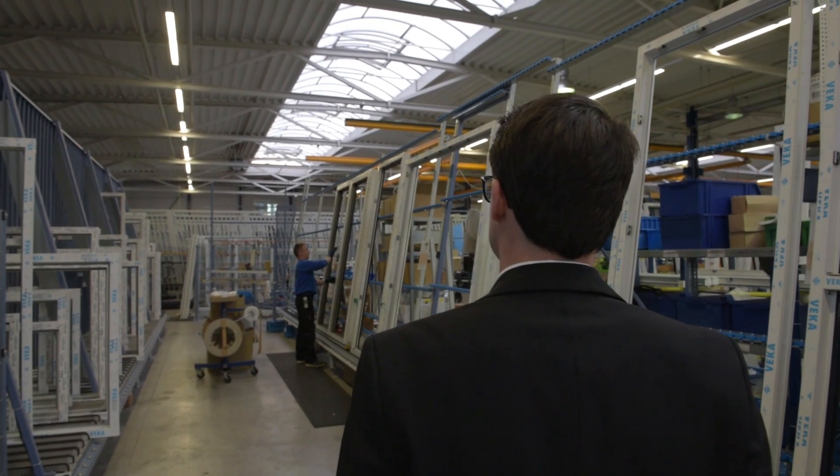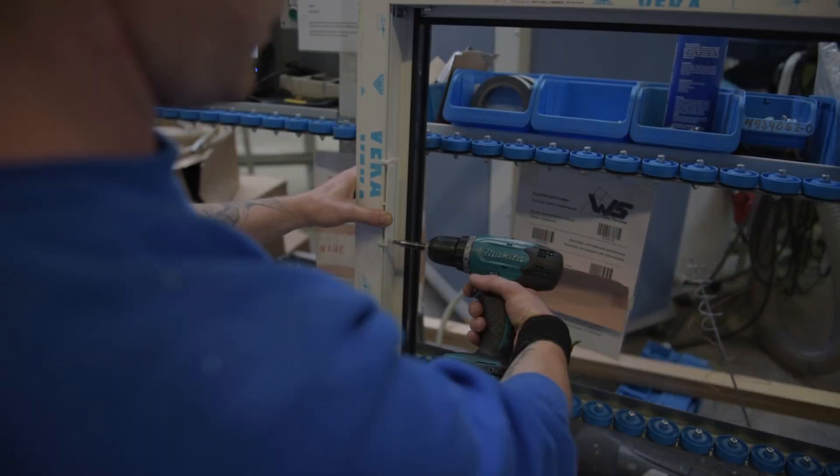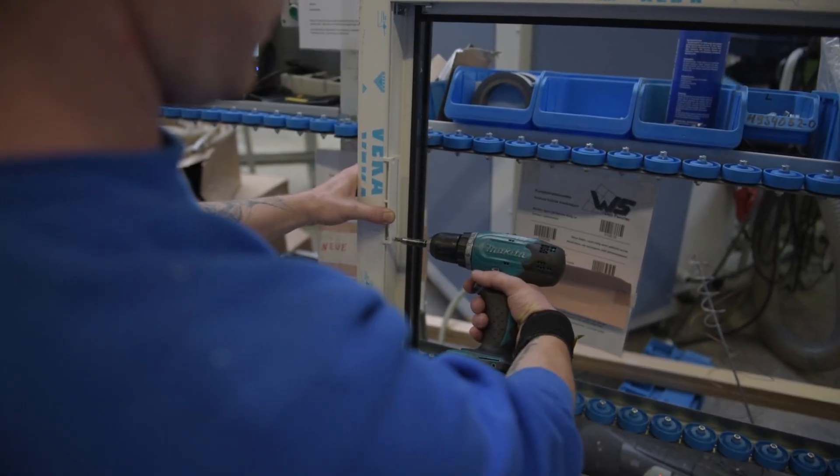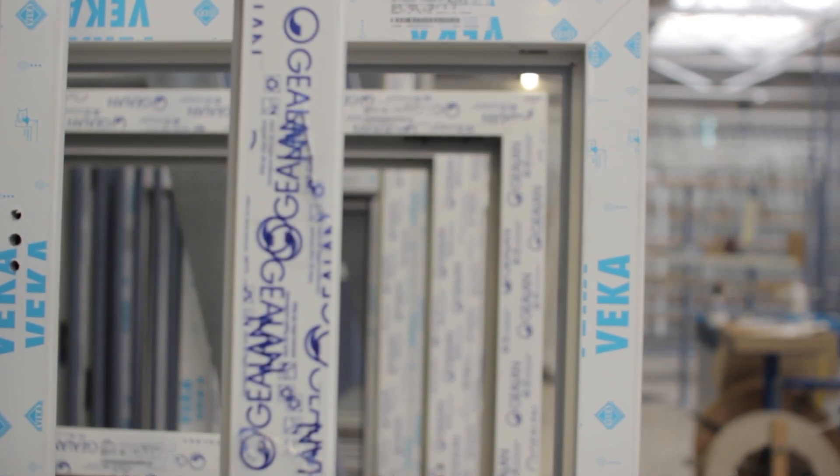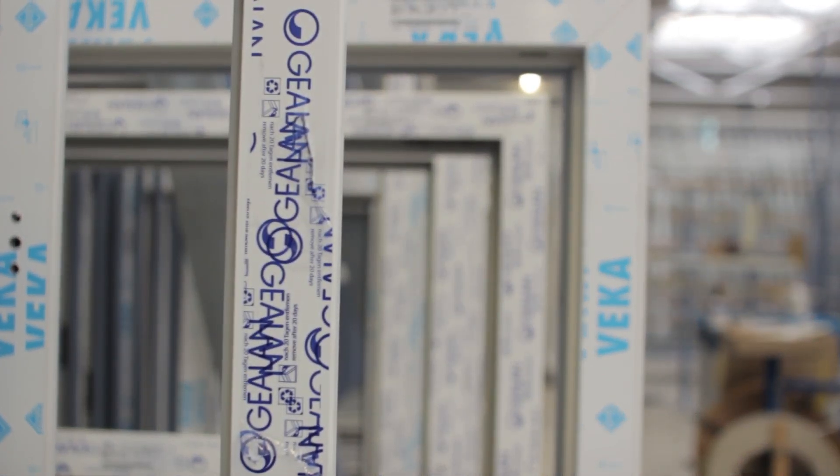Sash hanging. One of the most decisive production steps before our windows leave the plant. Here sashes and frames will be brought together to form the complete item.